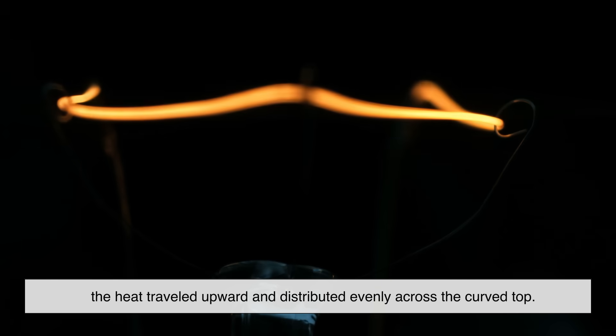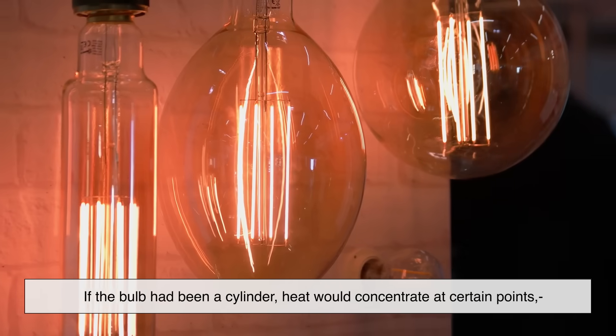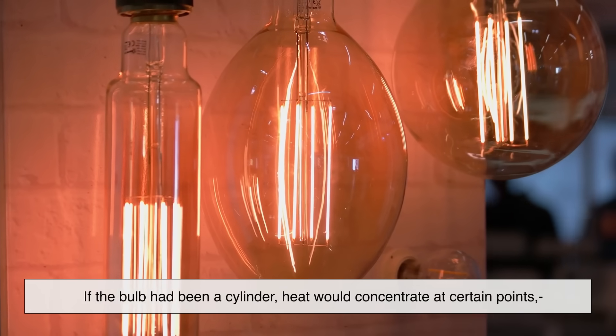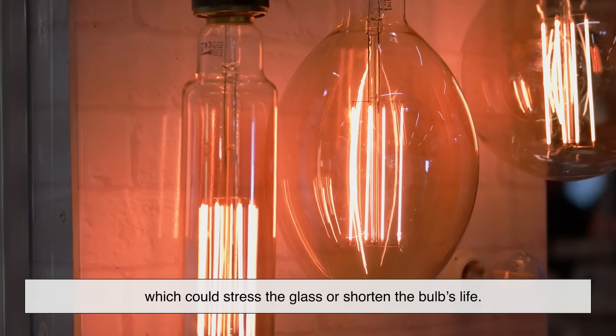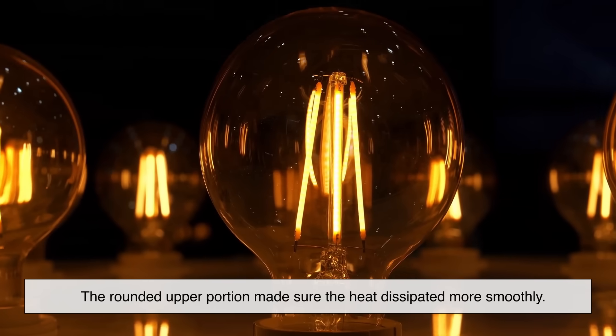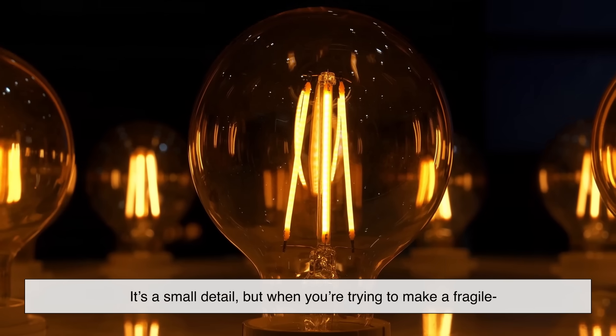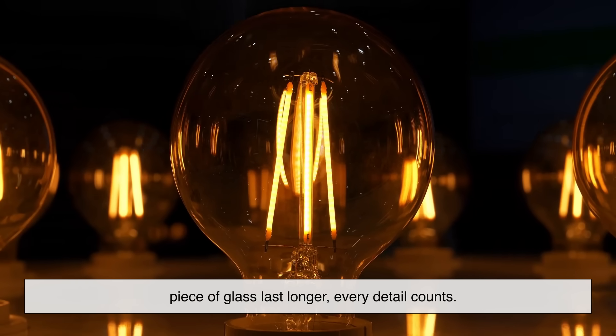If the bulb had been a cylinder, heat would concentrate at certain points, which could stress the glass or shorten the bulb's life. The rounded upper portion made sure the heat dissipated more smoothly. It's a small detail, but when you're trying to make a fragile piece of glass last longer, every detail counts.